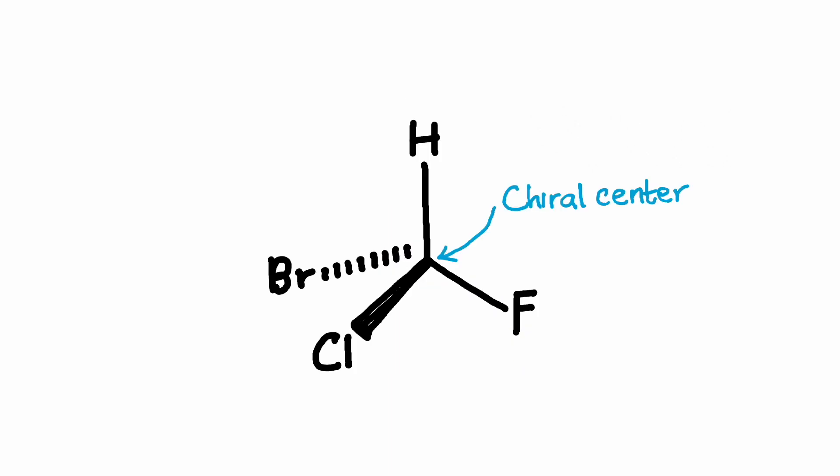Enantiomers occur when a molecule has one or more chiral centers. Chirality arises from the presence of asymmetric carbon atoms. An asymmetric carbon atom is bonded to four different atoms or groups. This allows for different spatial arrangements of those atoms or groups around the asymmetric carbon atom.